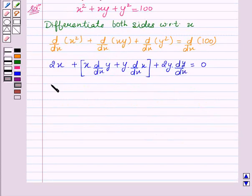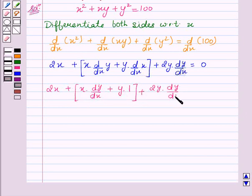This can be written as 2x + x(dy/dx) + y(1) — since the derivative of x with respect to x is 1 — plus 2y(dy/dx) = 0. Now this can be written as 2x + x(dy/dx) + y + 2y(dy/dx) = 0.